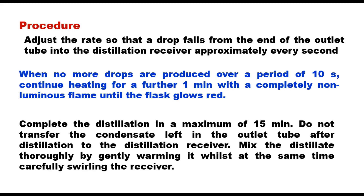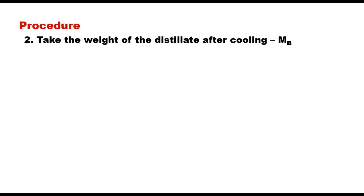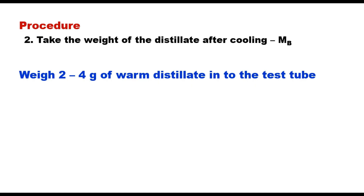Mix the distillate thoroughly by gently warming it while carefully swirling the receiver. The distillate will have a yellowish color. Take the weight of the distillate after cooling and let that weight be MB. Now, depending upon the expected paraffin wax content in the bitumen, take about 2 to 4 grams of warm distillate into the test tube. If the paraffin wax content cannot be estimated in advance, take 3 grams of this distillate.